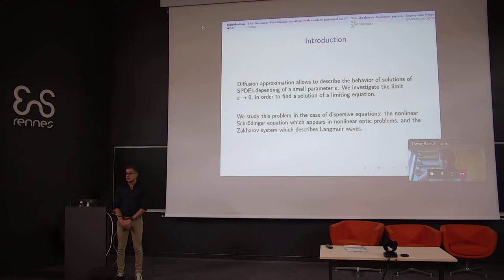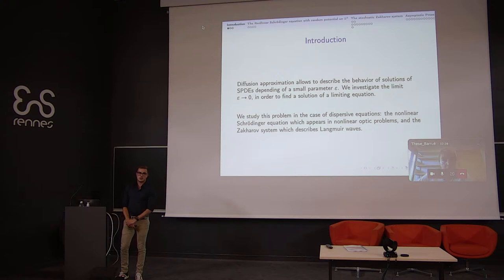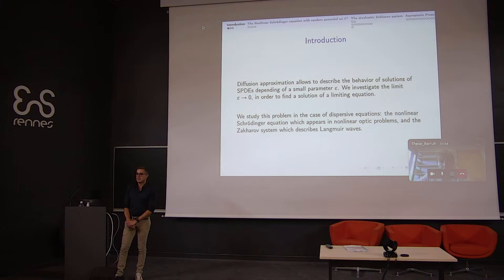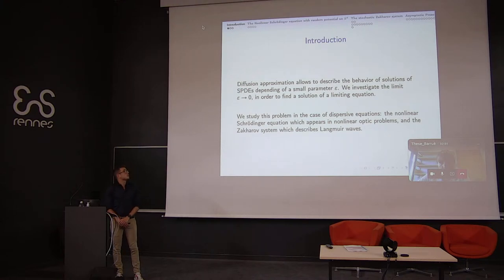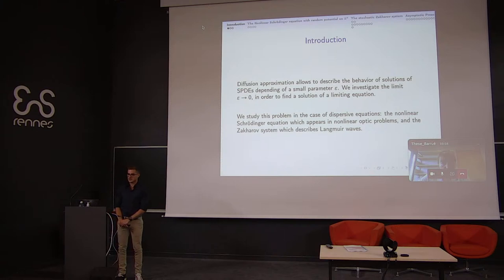Diffusion approximation describes multiscale problems which depend on the parameter epsilon. More precisely, in this kind of problem there are two processes which vary at different timescales. The first is a rapidly varying process which drives the other by entering as a coefficient in the equation satisfied by the slowly varying one. Diffusion approximation allows us to better understand the limit as epsilon goes to zero of these systems, where a decorated noise appears and involves diffusion processes.